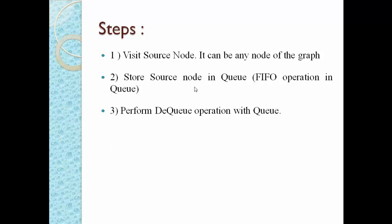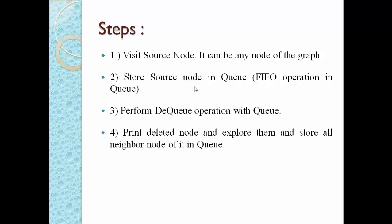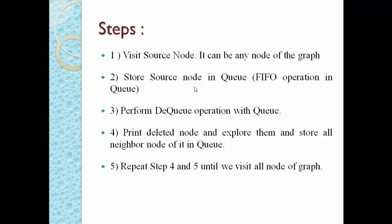Step three: perform a dequeue operation with the queue. This deletes the source node from the queue since dequeue removes using FIFO. Step four: print the deleted node, explore it, and store all its neighbor nodes in the queue. Explore means visiting all neighbor nodes directly connected to the deleted node and inserting them into the queue. Step five: repeat steps four and five until all nodes of the graph are visited.